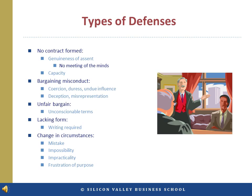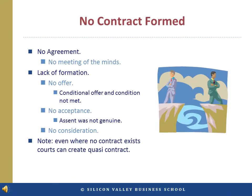A change in circumstances resulting from a later unforeseen event can render a contract unenforceable on grounds of impossibility, impracticability, or frustration of purpose. If no contract was actually formed, then a breach of contract claim has no merit. As we can see in the slideshow on formation, there are a number of ways that contract formation can be defective.